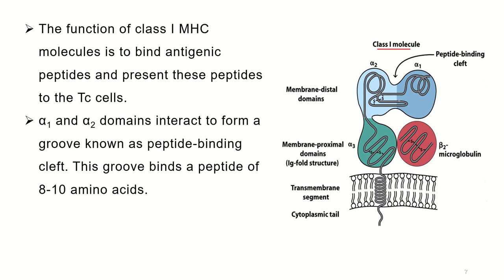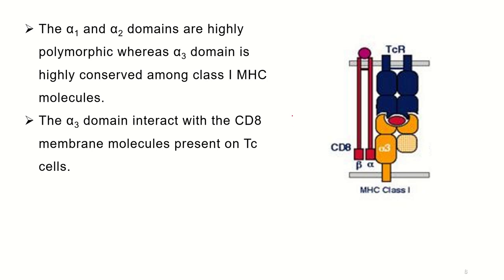The function of the Class 1 MHC molecule is to present antigenic peptides to TC cells. Alpha 1 and alpha 2 are the two external domains that form a groove called the peptide binding cleft. This peptide binding cleft binds antigenic peptides of 8 to 10 amino acids in length. As shown in the diagram, the T cell surface has a T cell receptor and the co-receptor CD8. The alpha chain and beta 2 microglobulin make up the Class 1 MHC molecule, and the peptide binding groove presents antigenic peptides to the TC cell.